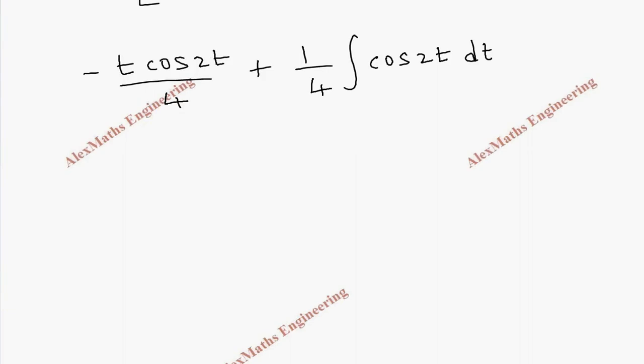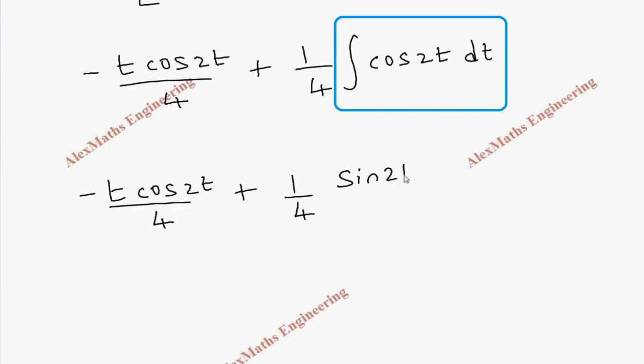Now we have to perform the simple integration of the last term and write the rest as it is. Minus t cos 2t by 4 plus 1 by 4, and this is sine 2t by 2 plus c.